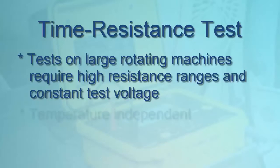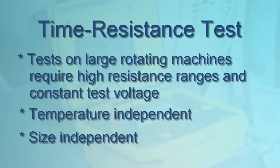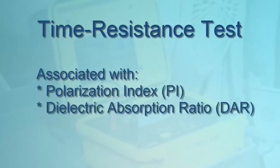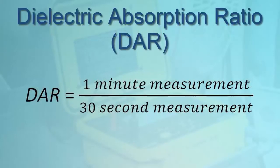The time resistance test is also independent of the size of the system under test. It is sometimes associated with two values: the polarization index (PI) and the dielectric absorption ratio (DAR). The polarization index is derived by dividing the 10-minute resistance measurement by the 1-minute measurement. The dielectric absorption ratio is calculated by dividing the 1-minute measurement by the 30-second measurement. Although DAR is no longer commonly used with new insulation systems, it may still have applicability when testing older insulating materials.